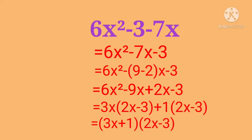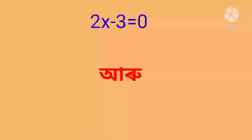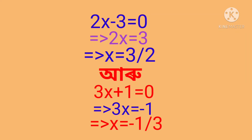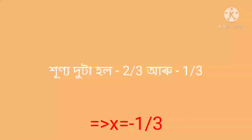Setting each factor equal to zero: 2x minus 3 equals 0 gives x equals 3 by 2, and 3x plus 1 equals 0 gives 3x equals minus 1, so x equals minus 1 by 3.